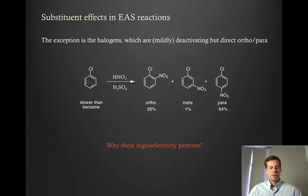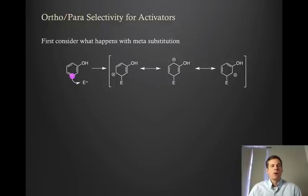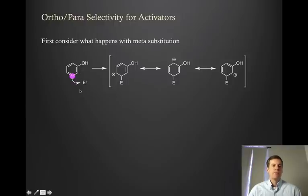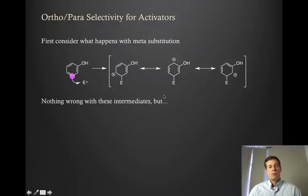So why do we see these regioselectivity patterns? We want to think about the intermediate cations we generate during electrophilic aromatic substitution. Let's take phenol, which has a resonance-activating group. First, let's imagine the meta reaction. If we reacted with the electrophile meta, we get this intermediate, which we could draw in any of these different resonance forms. The cation is spread around at those three positions, and there's actually nothing terribly bad about this intermediate — it's not especially unstable. It looks okay.